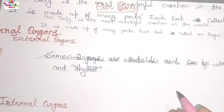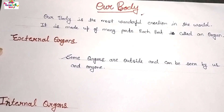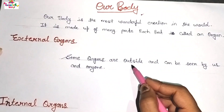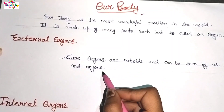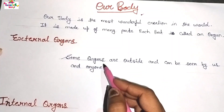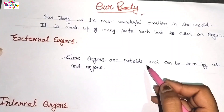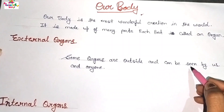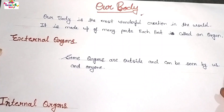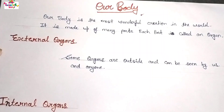It is made up of many parts. Each part is called an organ. Some organs are outside and can be seen by us and anyone. Kuch organs baahaar hotay hain, aur can be seen by us and anyone. Jo hummein ya kisi aur ko bhi dikhai day saktay hain — inhein hum baahri organs kehtay hain.